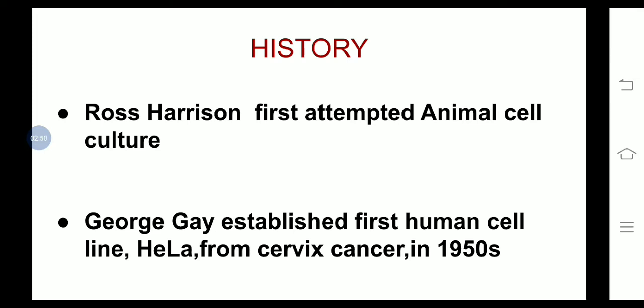Coming to history: Ross Harrison first attempted animal cell culture. George Gey established the first human cell line, HeLa, from a cervix cancer patient named Henrietta Lacks in the 1950s. The name HeLa comes from the first two letters of her first name, Henrietta, and the first two letters of her last name, Lacks.